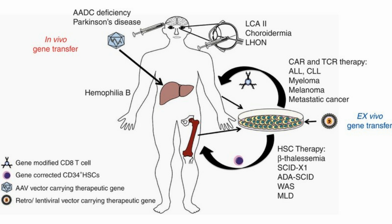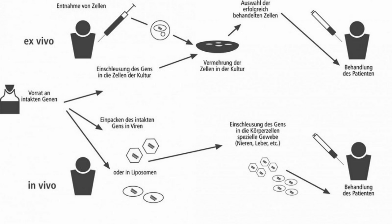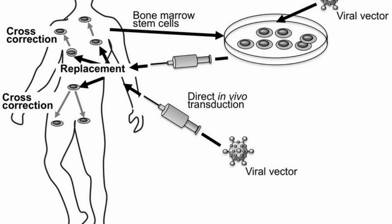Gene therapy can be categorized into two major types: ex vivo gene therapy and in vivo gene therapy. The key difference is that in ex vivo gene therapy, therapeutic genes are transferred to in vitro cell cultures and reintroduced into a patient, while in in vivo gene therapy, genes are delivered directly to the patient's tissues or cells without culturing the cells in vitro.